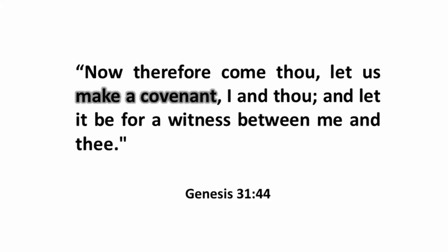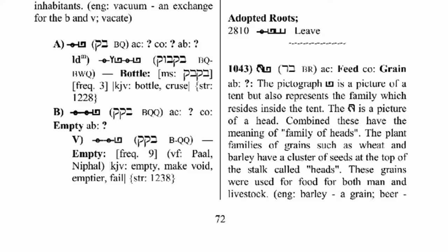Now let's go back up to the parent root. The parent root includes the same content as the child root: the Hebrew spelling, a transliteration, and then the three meanings of this word. It then provides a detailed definition of this parent root. We can see that this parent root has the meaning of feed and grain. Now we can go down through all the child roots derived out of this parent root, and the words derived out of the child roots, looking for some common themes.